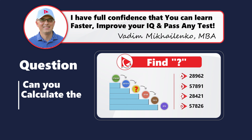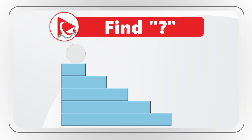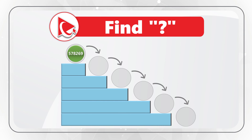I love this question because what's happening here is so unusual. We need to calculate the missing number in the ball that's in the middle of the sequence. We see a ball rolling from the top of the stairs to the bottom. As it rolls, it changes color and number. In the top position, it's a green ball with the numbers 578269. As it rolls, it becomes a blue ball and the numbers change to 287515.